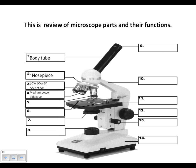Part number four is the medium power objective. It's the middle in length, and it magnifies ten times on the microscopes that we use in class. Part five is the high power objective, and as you can see, it's the longest of the three objectives and it magnifies forty times.